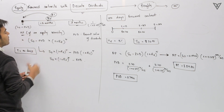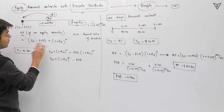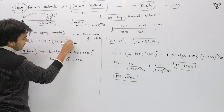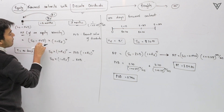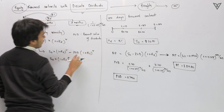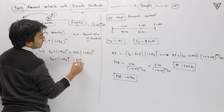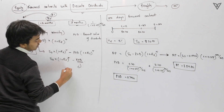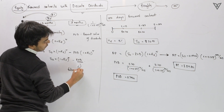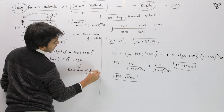So the formula is: (S0 - PVD) × (1 + rf)^T, which can be expanded to S0 × (1 + rf)^T minus PVD × (1 + rf)^T. Now PVD × (1 + rf)^T is nothing but FVD — the future value of dividends.